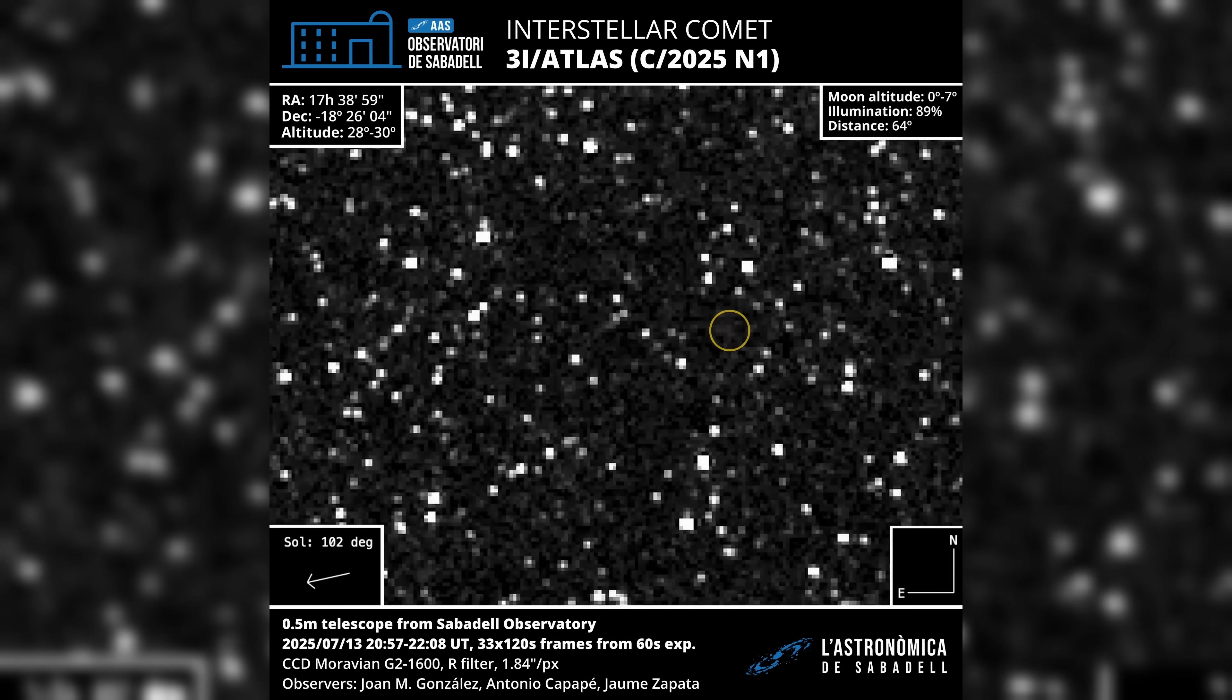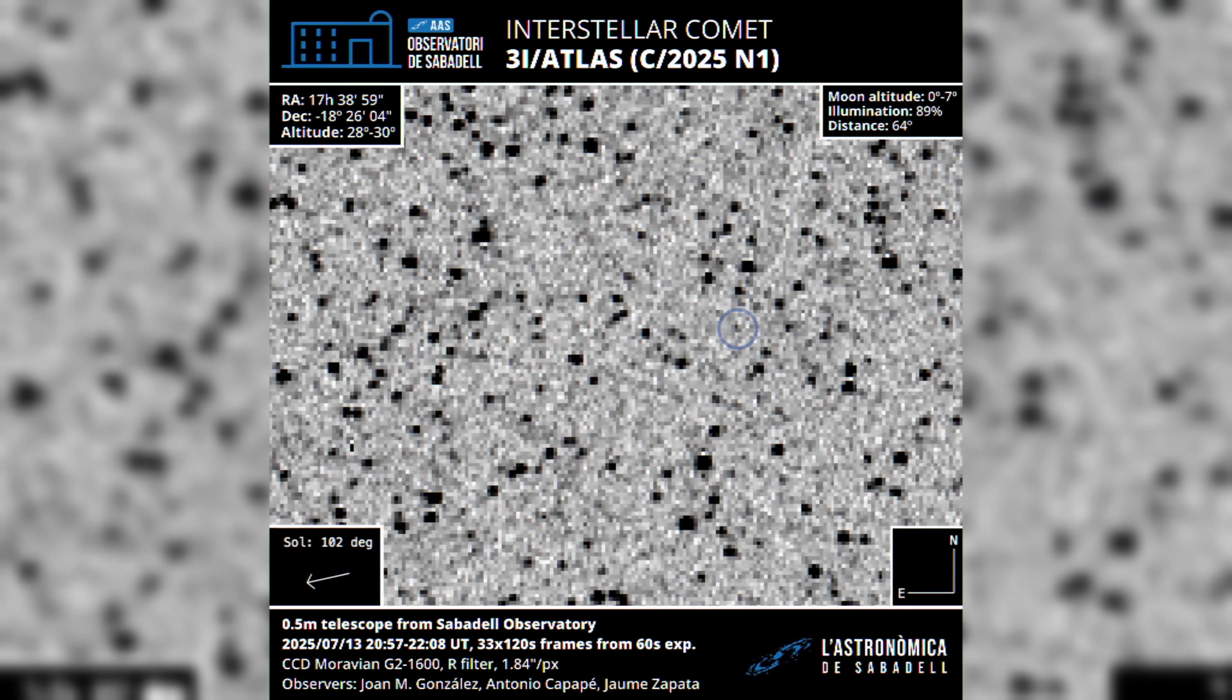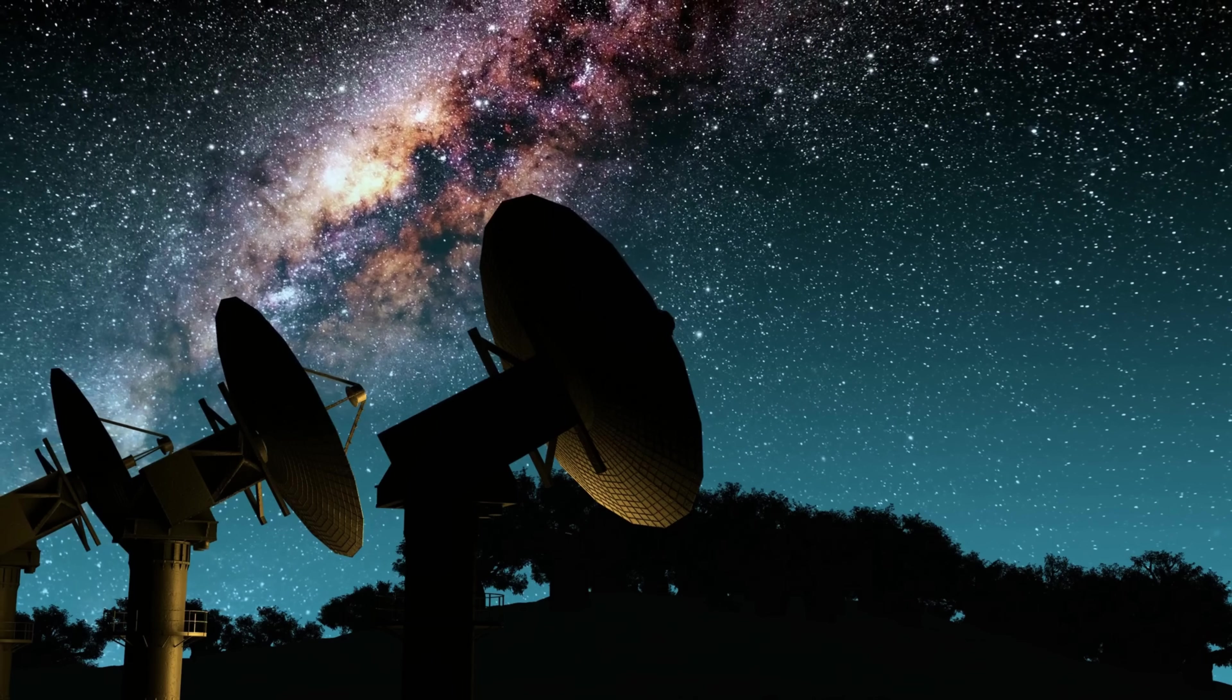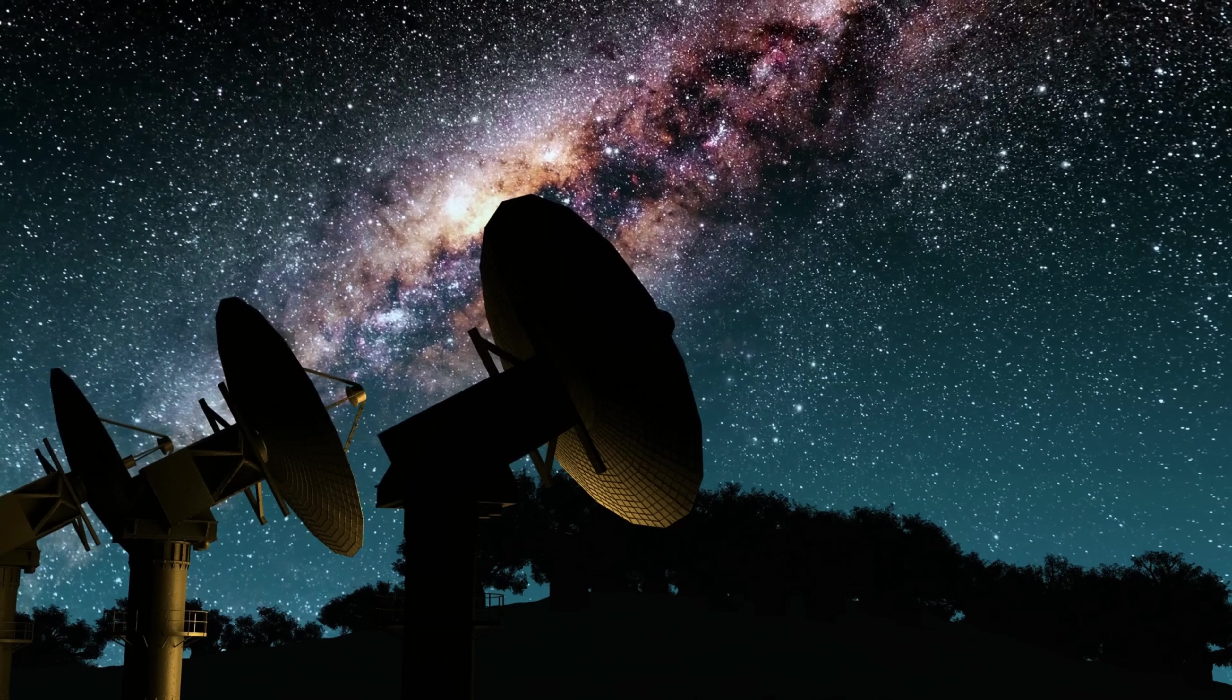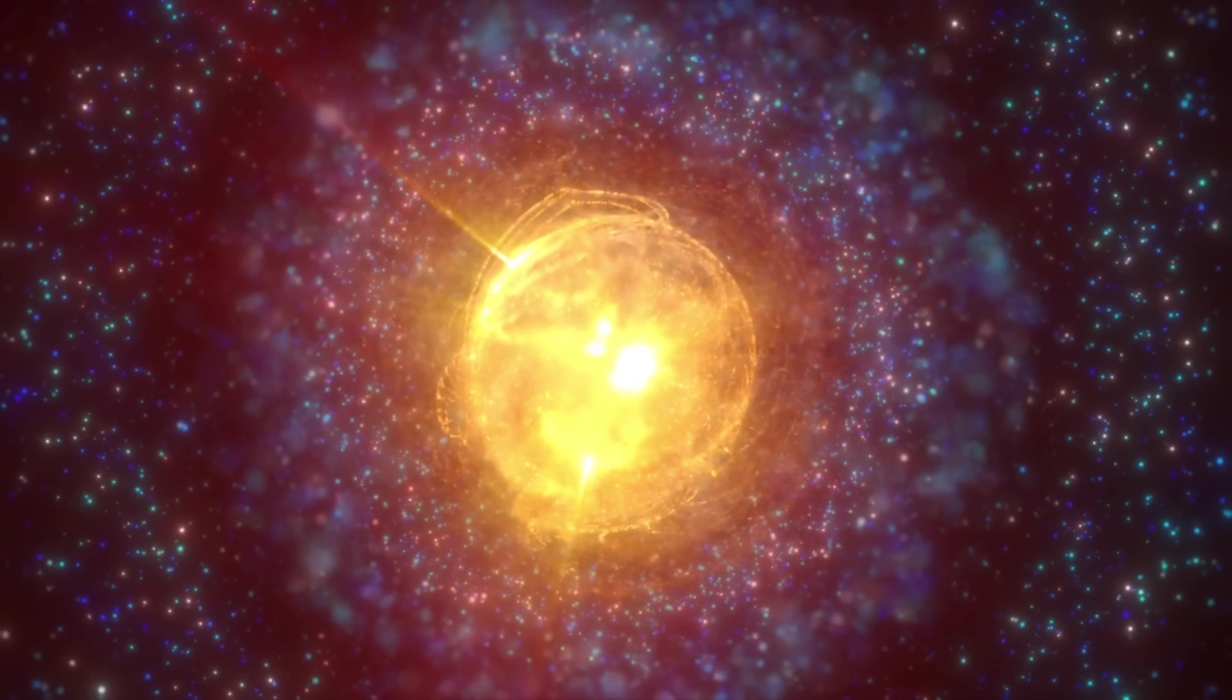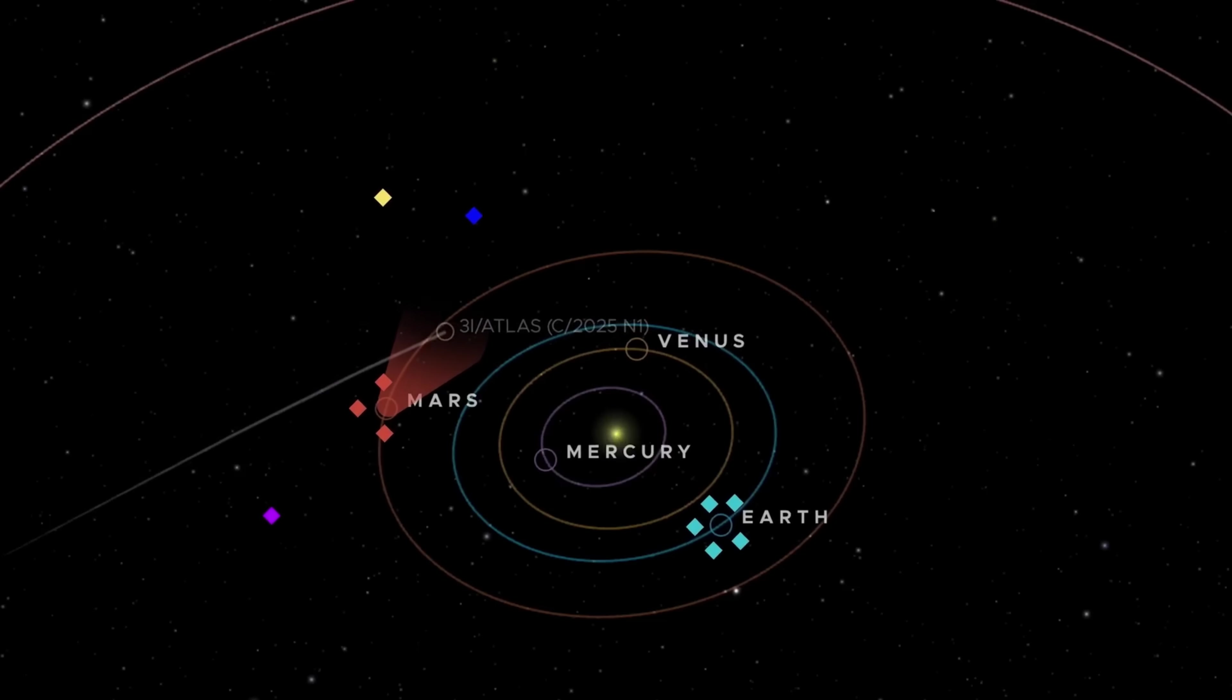As 3I/ATLAS continues its journey outward, destined to pass the orbit of Jupiter in March 2026 and eventually exit the solar system forever, it leaves behind a legacy of data that will be mined for years. The non-detection at 1 to 12 gigahertz helps refine the parameters of the Drake Equation, specifically the variables concerning the prevalence of active probes. It forces us to confront the reality that if the galaxy is colonized, the colonizers are not filling the void with loud, omnidirectional radio chatter. It suggests that our search strategies may need to evolve, perhaps moving toward optical SETI to hunt for laser pulses, or focusing on artifact SETI, searching for heat signatures of Dyson spheres rather than communication signals. The silence of 3I/ATLAS is a data point that narrows the search space, saving future researchers from chasing ghosts in the same frequency bands.